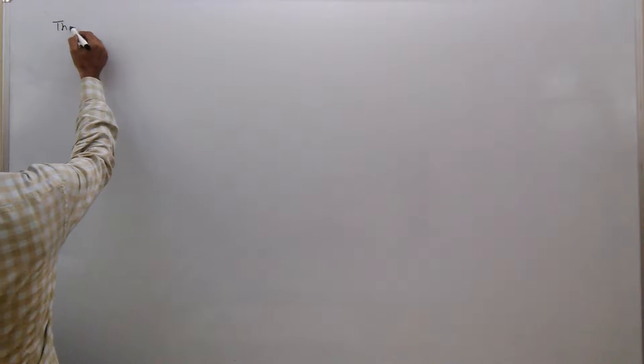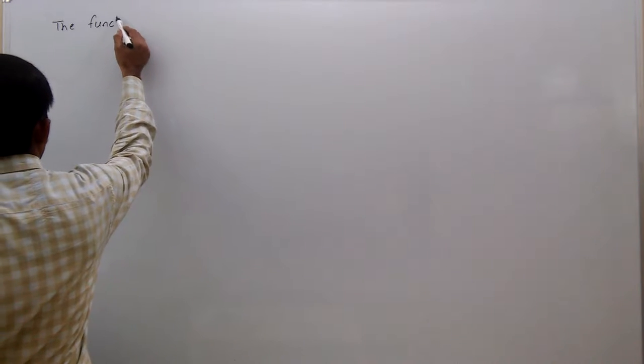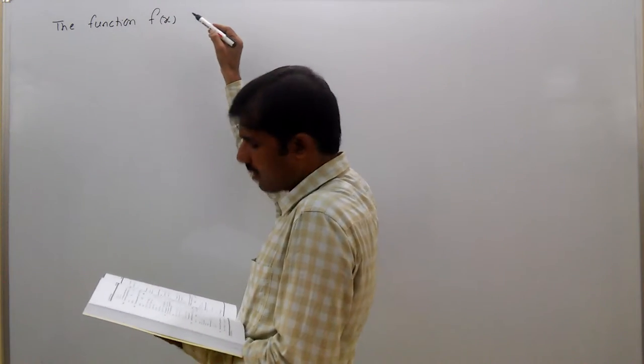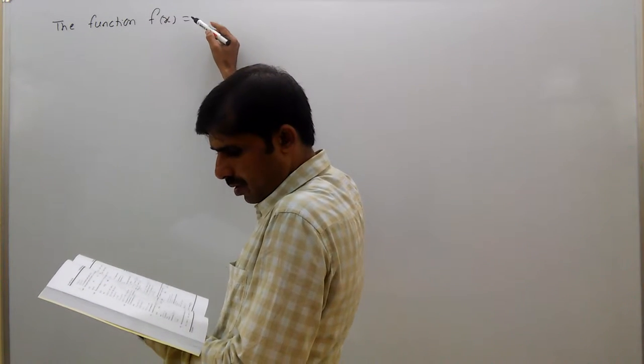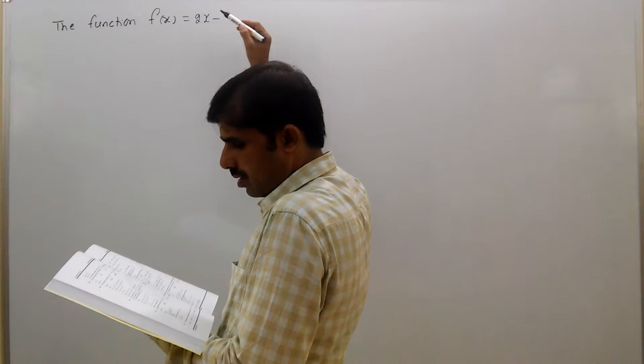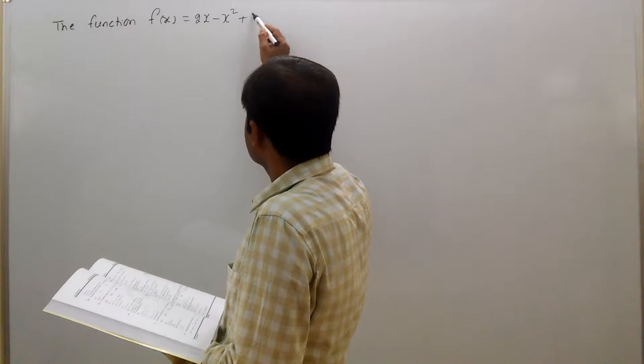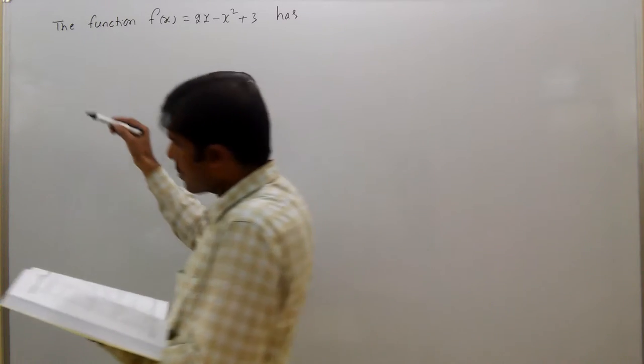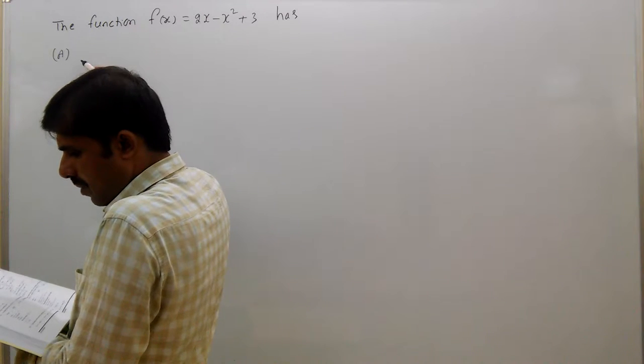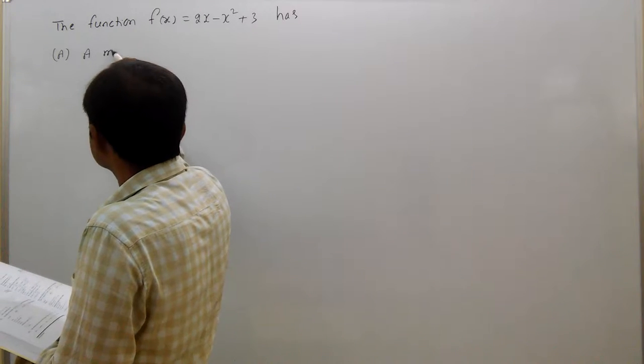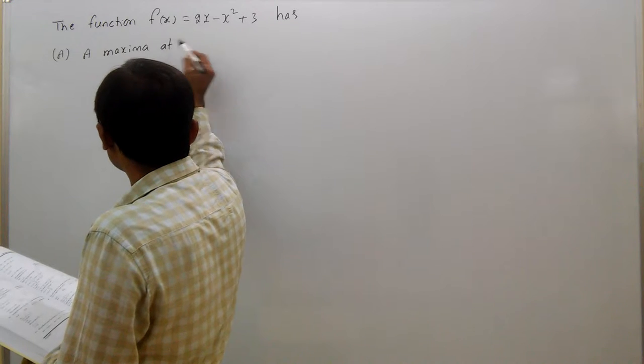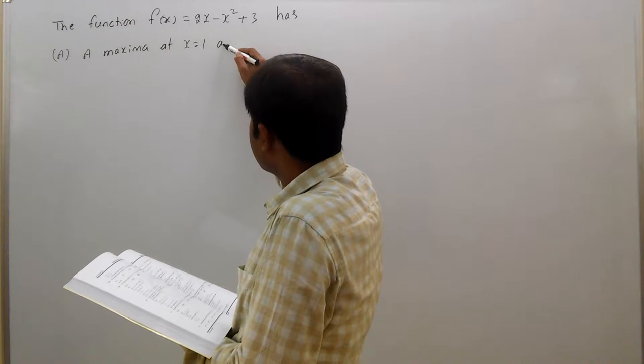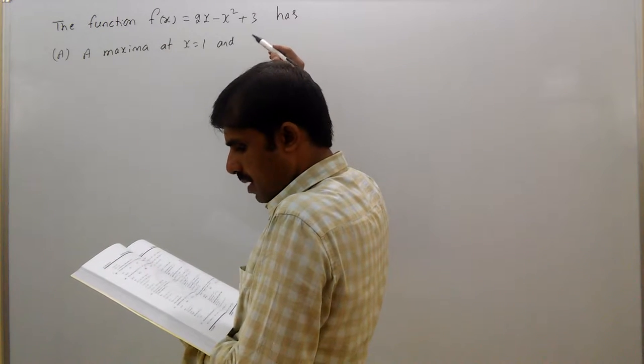The function f(x) = 2x - x² + 3 has option a: a maxima at x = 1 and minima at x = 5.